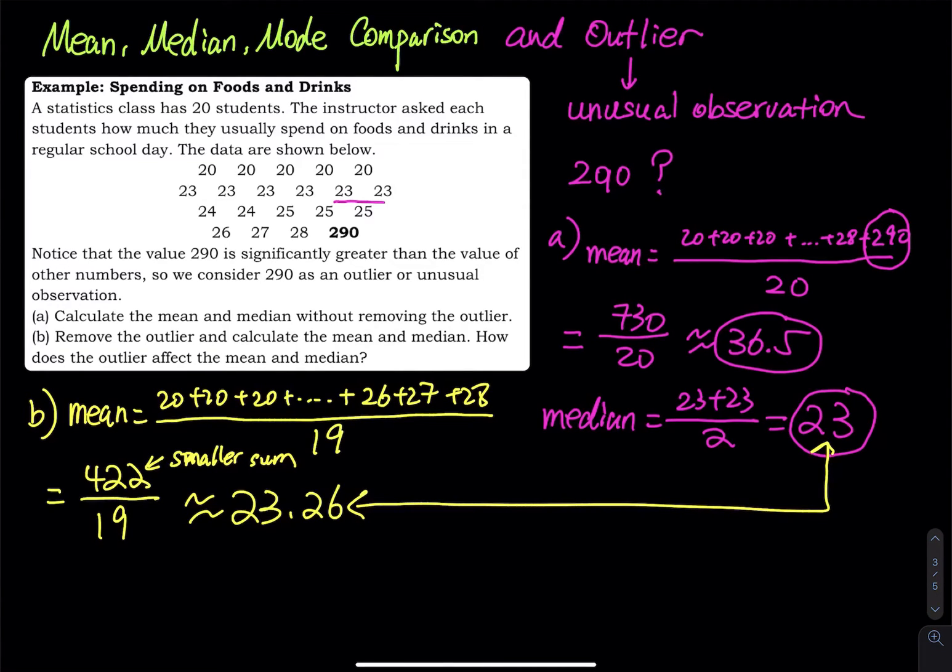In fact, this 23.26, they are pretty close. And then what about the median? The median, since you have 19 data, the median is the 10th value, so it's the 10th entry, which is just 23.